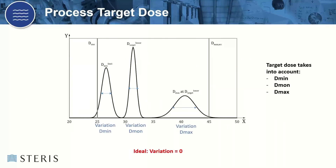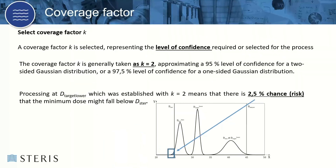This is a graphical representation of what we discussed. The target dose takes into account the minimum dose, the monitoring dose, and the maximum dose — all of which have variation associated with them and all need to be considered when setting process targets. A coverage factor K is selected representing the level of confidence for the process, usually K equals 2, which is a 95% confidence level for a two-sided Gaussian distribution or 97.5% for one-sided. For example, if processing at a lower target established with K equals 2, there is a 2.5% risk that the minimum dose might fall below the sterilization dose. So if you had a 25 kGy product specification and targeted 25 kGy, there is a 2.5% chance of falling below that level.